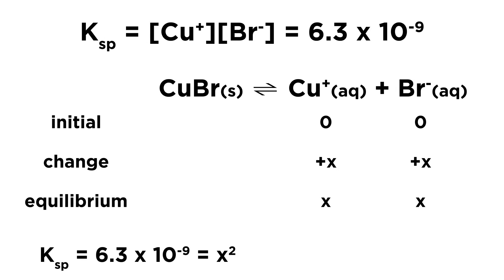Therefore the Ksp will be equal to X squared, and X will be 7.9 times 10 to the negative 5 moles per liter. This is the molar solubility of copper 1 bromide, which in this case is simply the concentration of copper ions and bromide ions in solution at equilibrium. This can be a little trickier if the Ksp equation involves exponents, but the process is essentially the same.